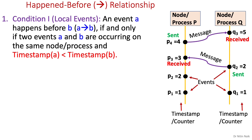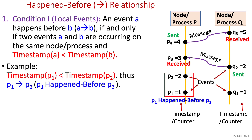We have been talking about the happened-before relationship, which determines the partial ordering of events in distributed systems. Now let's look at some specific conditions for happened-before relationship. An event A happens before B if one of the following conditions is true. First condition: an event A happens before B if and only if two events A and B are occurring on the same node or process and the timestamp of A is less than the timestamp of B. For example, two events P1 and P2 are occurring on the same node, the timestamp of P1 is less than the timestamp of P2, therefore P1 happens before P2.